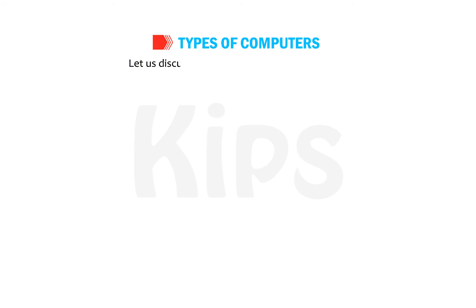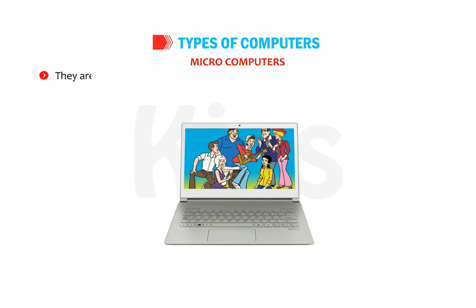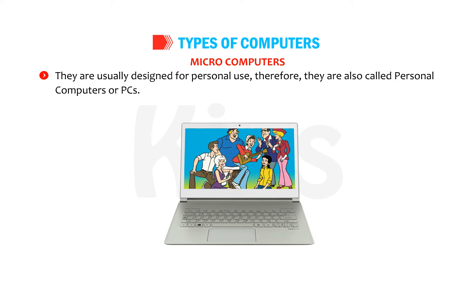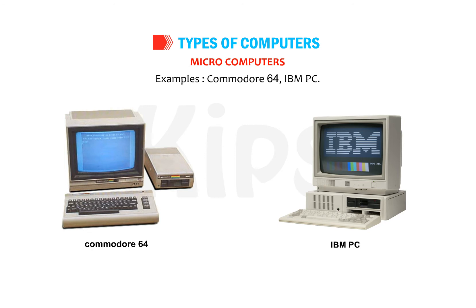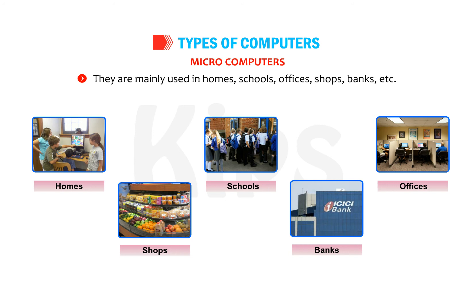Let us talk about types of computers. Microcomputers: these computers are small in size and cost less. They are usually designed for personal use, therefore they are also called personal computers or PCs. Examples include Commodore 64 and IBM PC. They are mainly used in homes, schools, offices, shops, banks, etc.